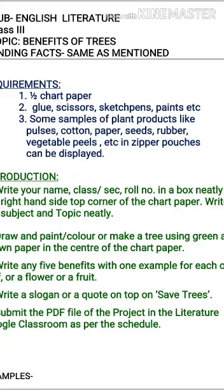Now, how you will go about this: first take the half chart paper and make a small box on the right-hand side in a corner. Inside the box write your name, class, section, and roll number. You will also mention your subject and topic very neatly. Then you need to either draw and color or make a tree using brown and green paper.